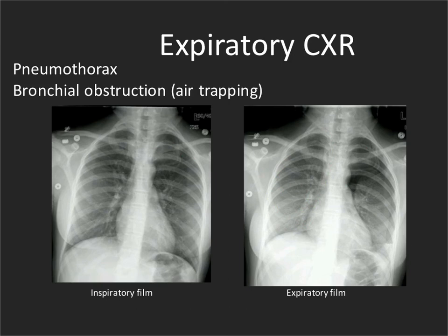The second reason for an expiratory film is if we're looking for evidence of major bronchial obstruction through air trapping. We look on the expiratory film for the normal lung to decrease in volume. A patient with a foreign body in one of the main bronchi cannot deflate that particular lung, so it stays at the same volume while the normal lung collapses, and therefore there will be mediastinal shift away from the side of obstruction.